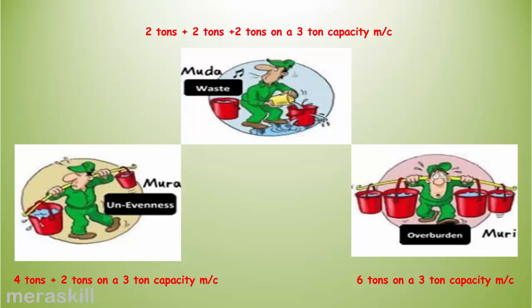On the other hand, suppose you were to process two tons, two tons, two tons — there is uniformity, so there is no Mura, no unevenness. There is no overburdening because the machine has a capacity of three tons, yet it still results in waste — there is still Muda. The best way, of course, would be three tons plus three tons, so that there is no Mura, no Muri, and no Muda.